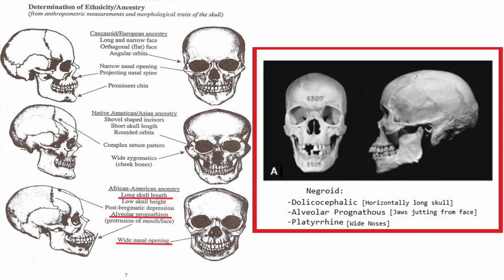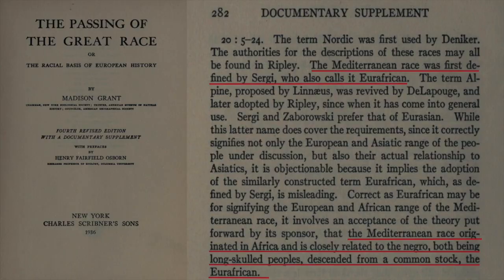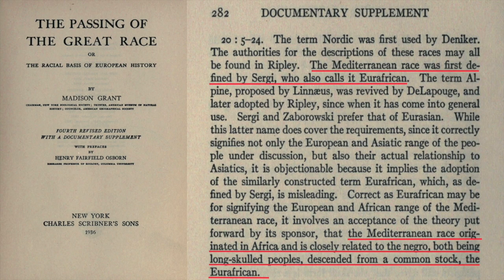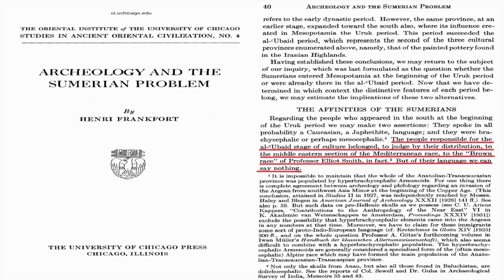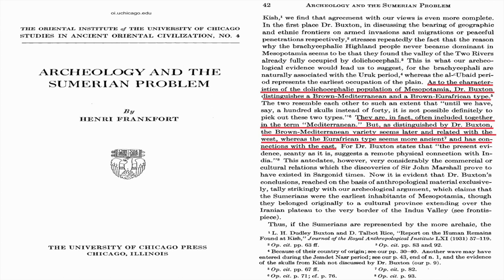According to Contributions to the Anthropology of Iran, the Eurafricain after Hayden has dark complexion, dark hair, dark eyes, a very long head, a nose often broad, and prognathism often slight. A long skull, prognathism, and a wide nose are often descriptions of Negroid-type peoples. According to The Passing of the Great Race, the Mediterranean race was first defined by Sergi, who also called it Eurafricain. The Mediterranean race originated in Africa and is closely related to the Negro, both being long-skulled peoples descended from a common stock.